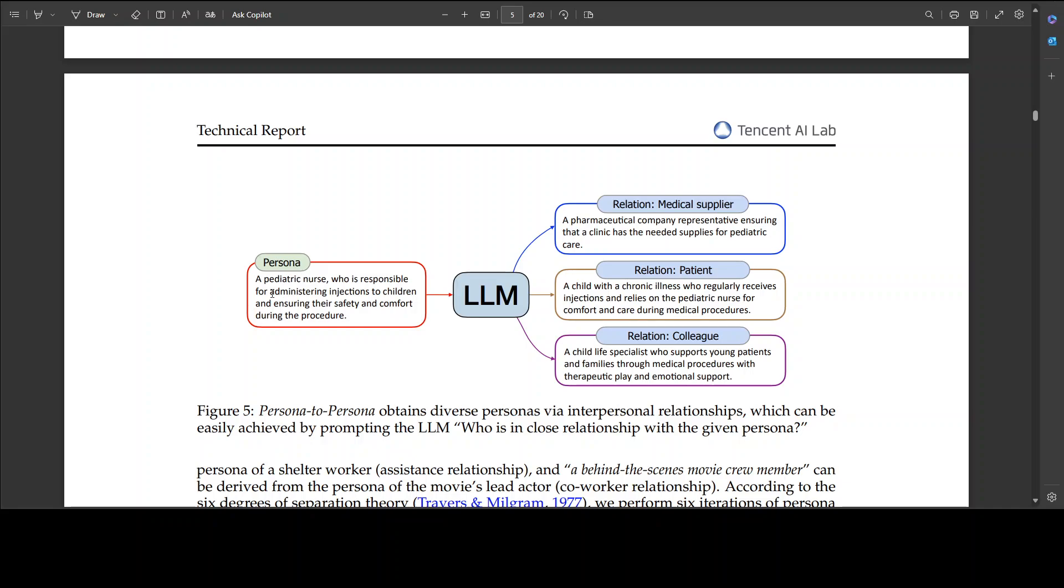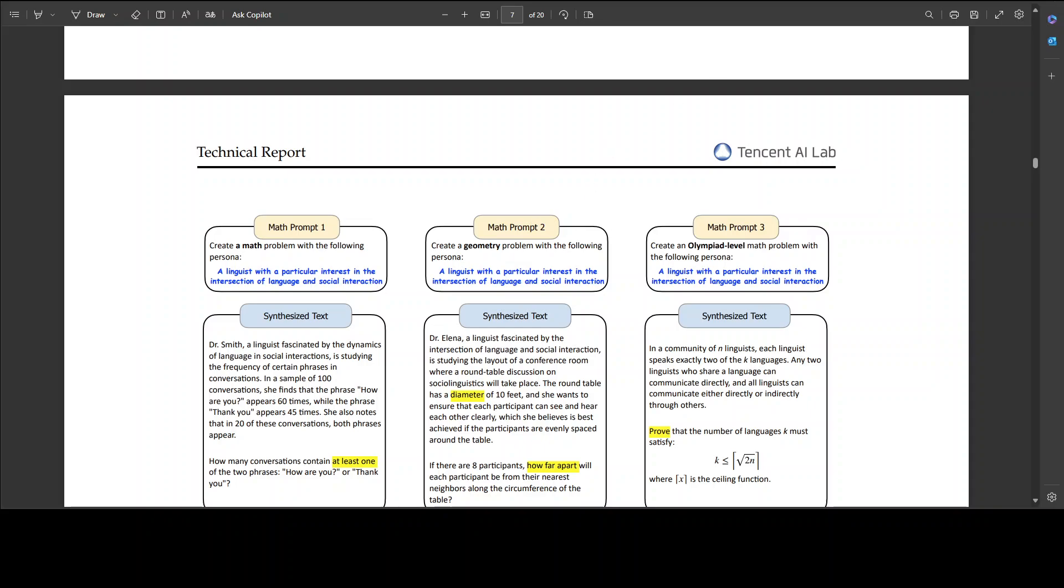Here you can see that this is again, on the left is a persona of a patriotic nurse. It has been given to LLM, and then some of the relations have been also created, the other personas who are in close relationship with the persona on the left. Then similarly, there is another interesting stuff where they are demonstrating the math problem resolution.